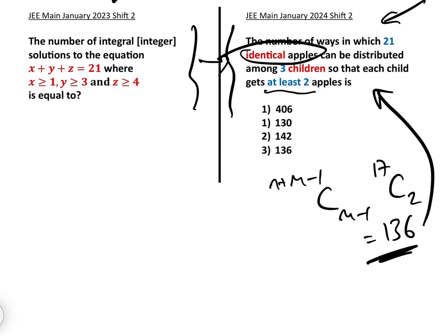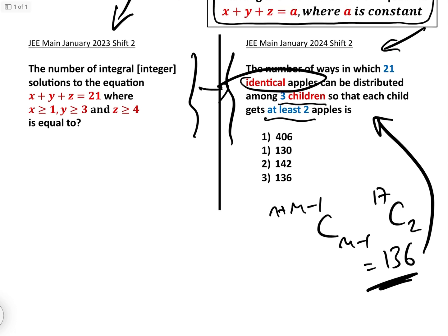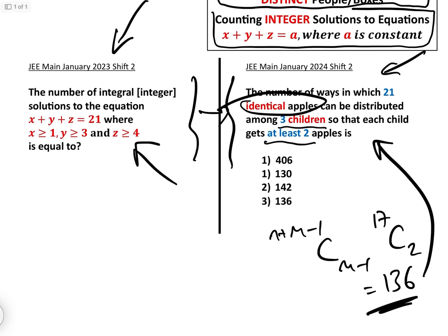Now we were dealing with identical apples and distinct children. Let's have a look at this question. What we're dealing with is distinct variables x, y, and z—you could consider them to be the children if you wanted to—and 21 identical number ones.